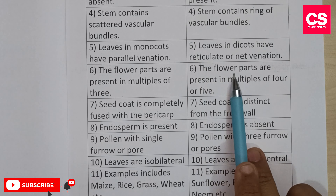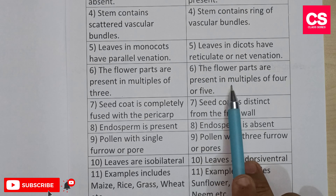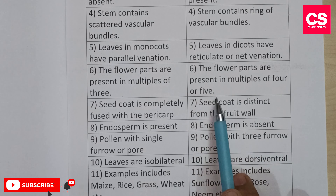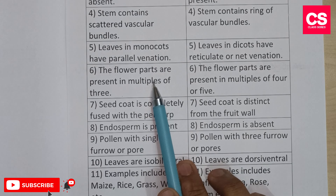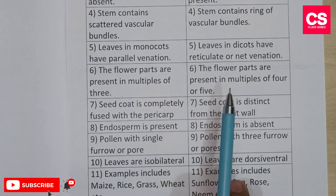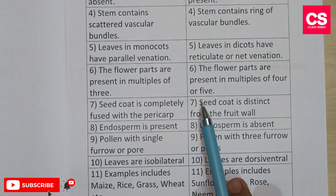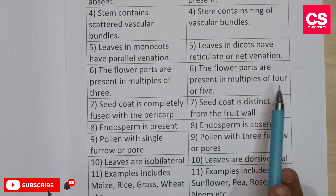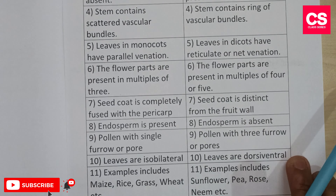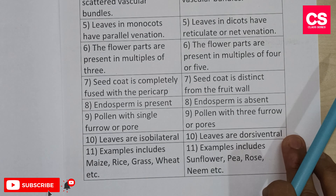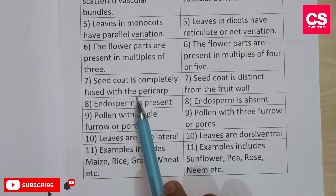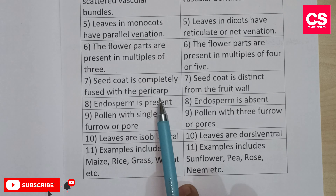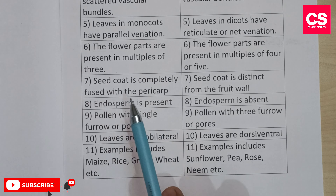The flower parts in monocot plants are present in multiples of three, while in dicot plants the flower parts are present in multiples of four or five. The seventh difference: in monocot plants the seed coat is completely fused with the pericarp.